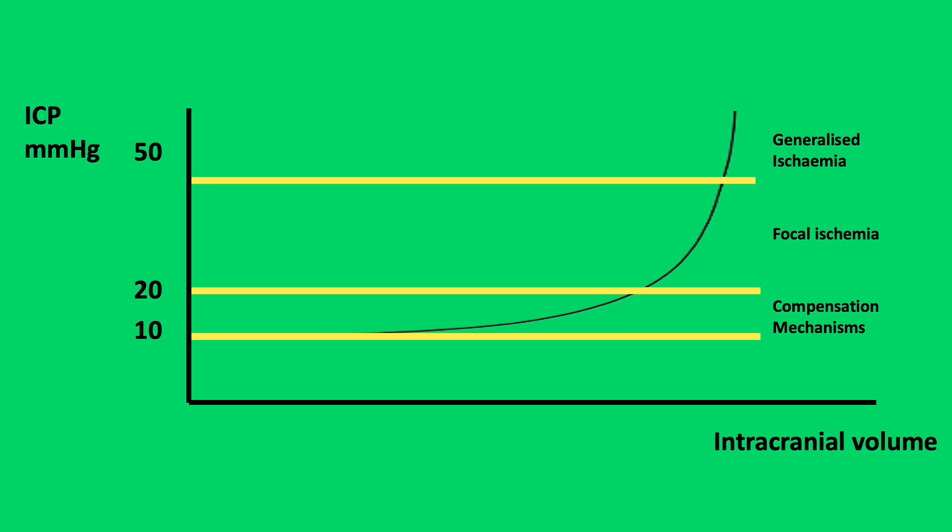This decompensation is due to all compensating mechanisms being exhausted — including, as discussed, reduction of venous blood, CSF, and arterial blood in the brain. The slope of the curve is dependent on which intracranial factor is increasing. For example, blood or CSF, which are poorly compressible, produce a steeper slope.